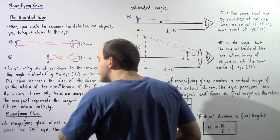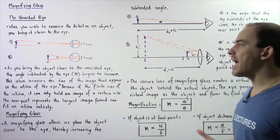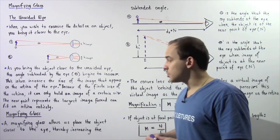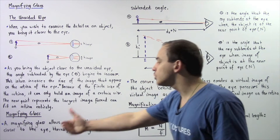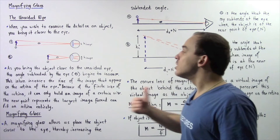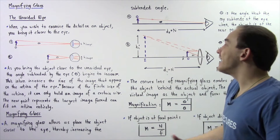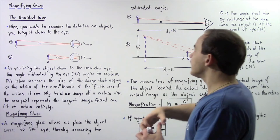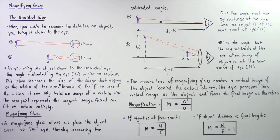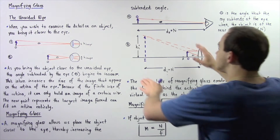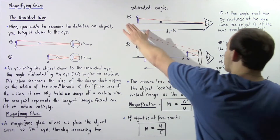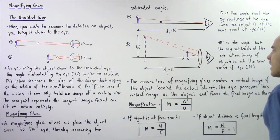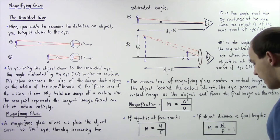Now let's discuss the magnifying glass. A magnifying glass allows us to place the object even closer to the eye — closer than the near point — thereby increasing the subtended angle and increasing the image size that falls onto the retina. To see exactly what we mean, let's look at the following diagram: diagram A in which we're not using a magnifying glass, and diagram B in which we have a magnifying glass.